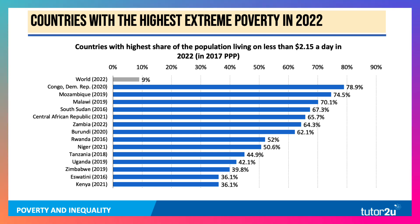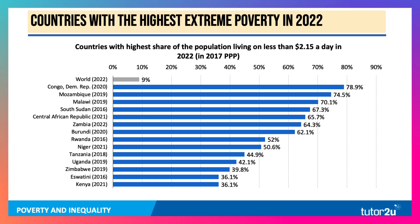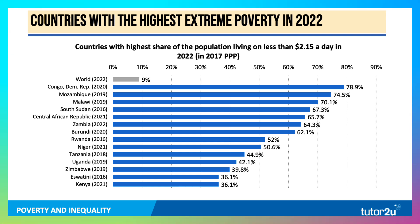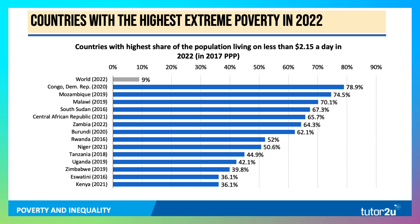This chart takes the 2022 data published by the World Bank, and it shows the countries with the highest share of the population living on less than $2.15 a day, adjusted for PPP. You'll see on the left-hand side that some of the data is a little bit out of date, but this is the latest published data. For the world, 9% of the global population live on less than $2.15 a day.